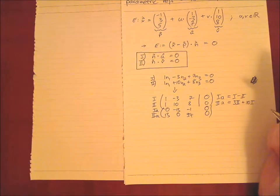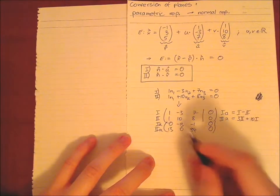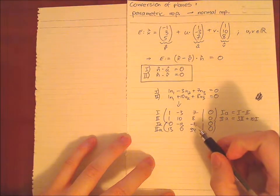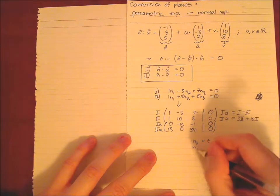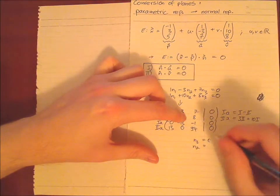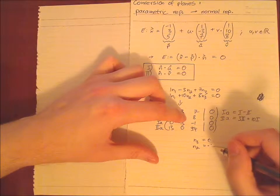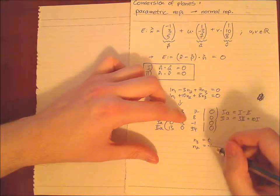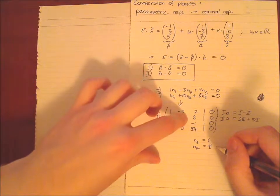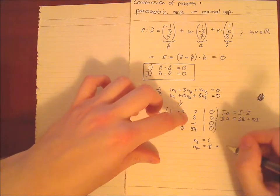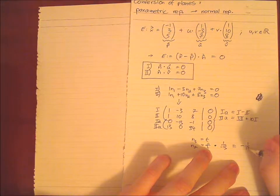So now we see we have one information less actually than we would need to determine all the components directly, all the components specifically. So we have to introduce a parameter. We say that in this case the third one is t. So n3 equals t. Then we can say n2 is plus t, so we have 1·t and we have to divide by minus 13. So we have (-t)/(-13), so (-1/13)·t. This is better.